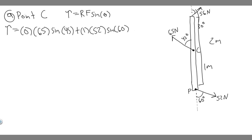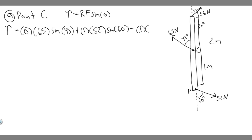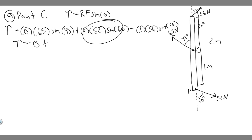Now let's move on to the next point. Notice when we push it, it's going to rotate clockwise, meaning we have to subtract it. So minus, and the radius is again one meter. One times the force, which is 56, times the sine of the angle, which is 30 degrees. So the net torque is zero, plus 52 times sine of 60, minus 56 times sine of 30.